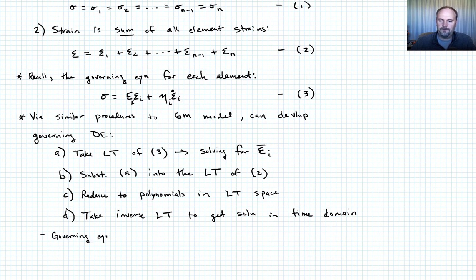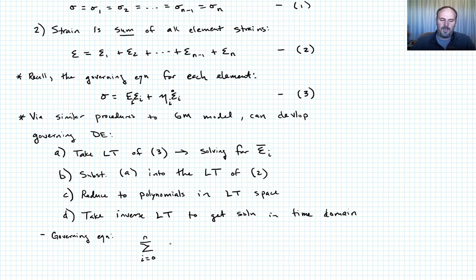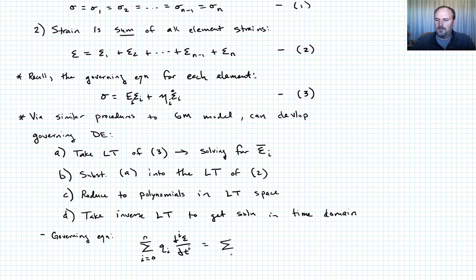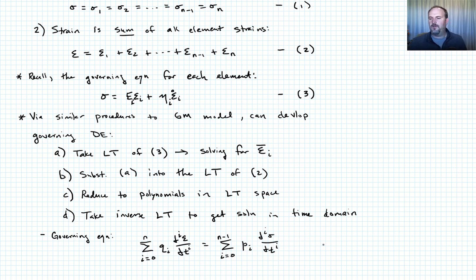The governing equation is given by the sum from i equals zero to n of q_i times the i-th derivative of epsilon with respect to time, equal to the sum from i equals zero to n minus one of p_i times the i-th derivative of sigma with respect to time. Call that equation four.